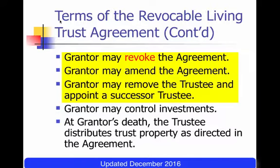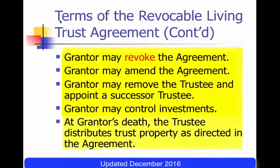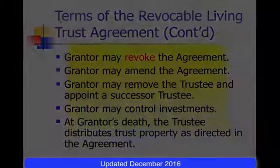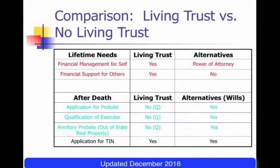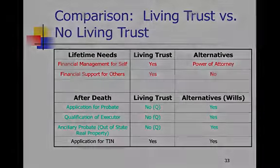The grantor typically controls all investment decisions while alive and capable. The terms of the trust typically say that at the grantor's death, the trustee distributes all the trust property as directed in the agreement. Next, we compare a revocable trust plan versus the alternative.